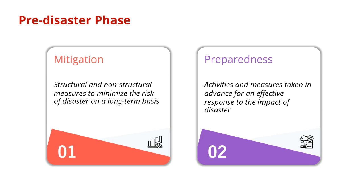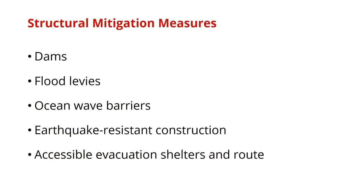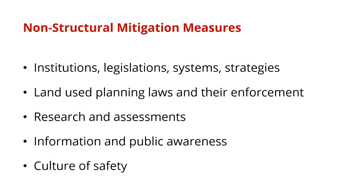Preparedness refers to activities and measures taken in advance for an effective response to the impact of disasters. For structural mitigation measures, we talk about dams, flood levees, ocean wave barriers, earthquake-resistant constructions, and accessible evacuation shelters and routes usable by persons with disabilities. Non-structural mitigation measures refer to institutions, legislation, systems, or strategies to mitigate the impact of disasters, including land use planning and enforcement, research and risk assessments, understanding potential impacts, information and public awareness, and most importantly, a culture of safety.